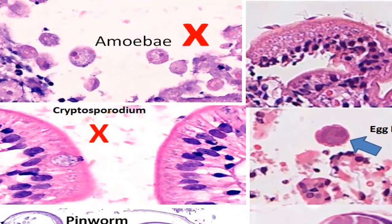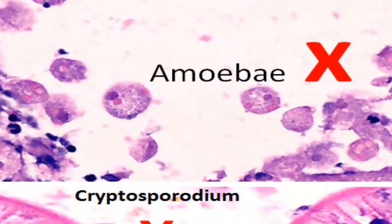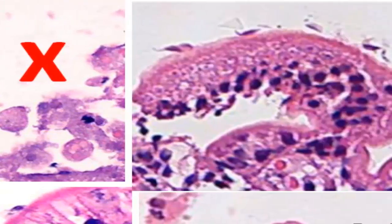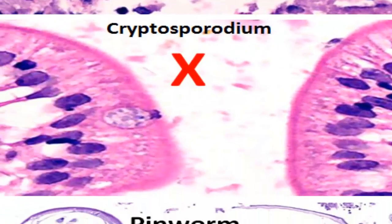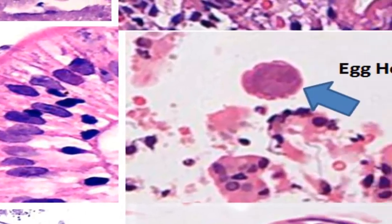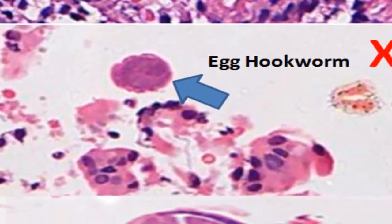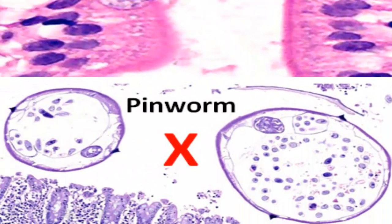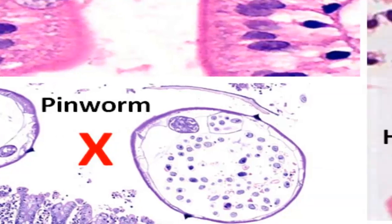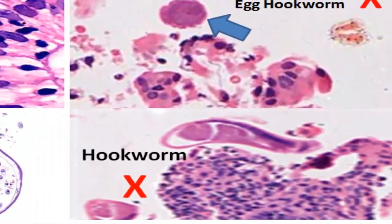For comparison, we see here amoeba, giardia, cryptosporidium, egg of hookworm, cross section of adult pinworm, and section of adult hookworm — none of which match the morphology of the parasite in question.